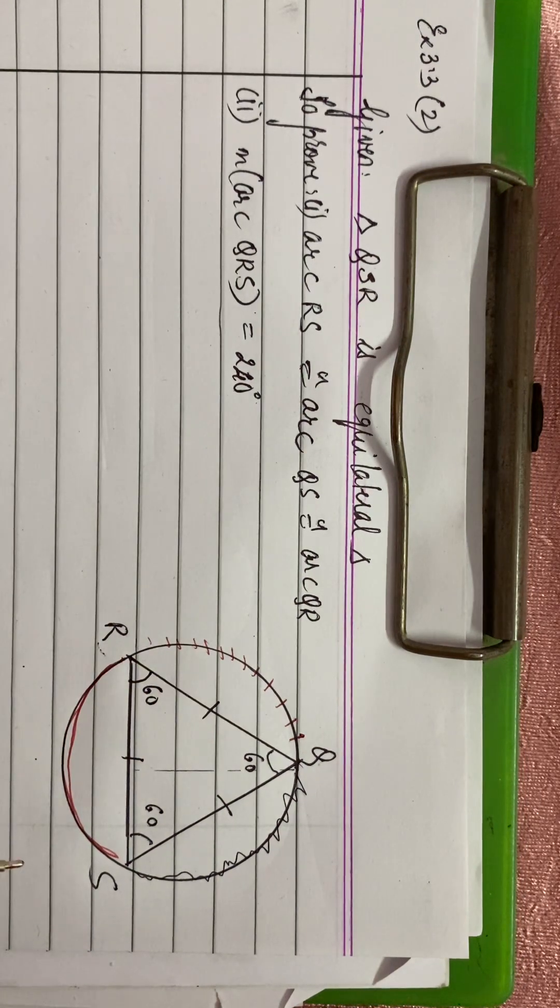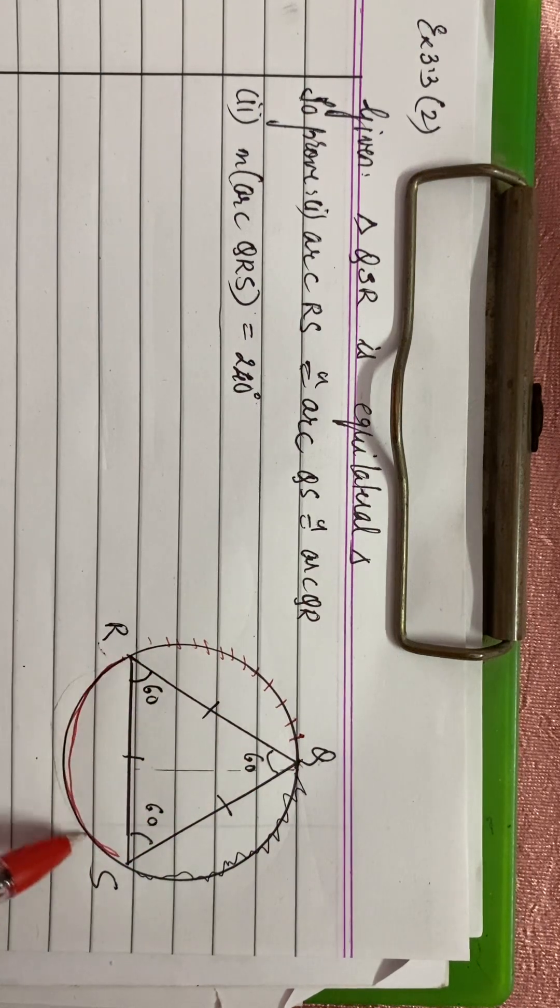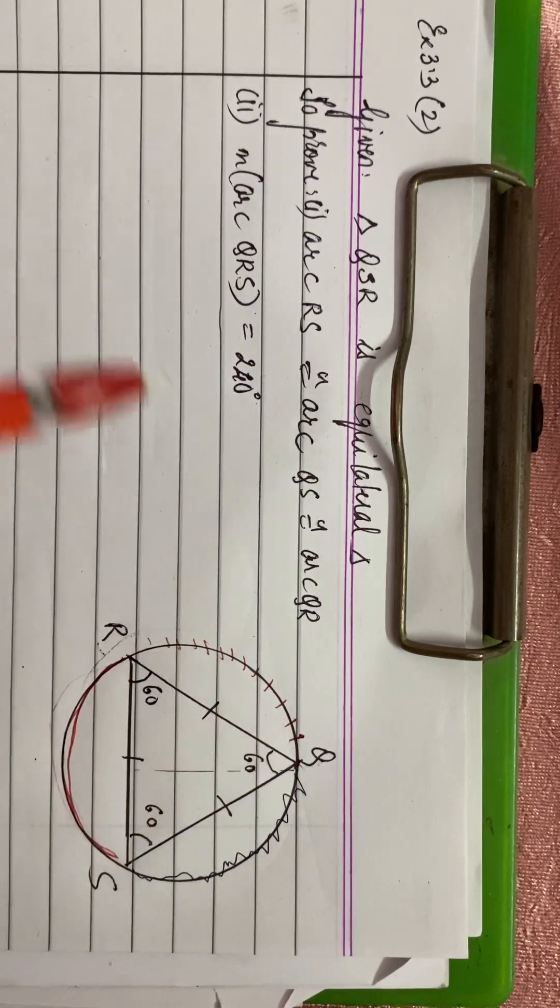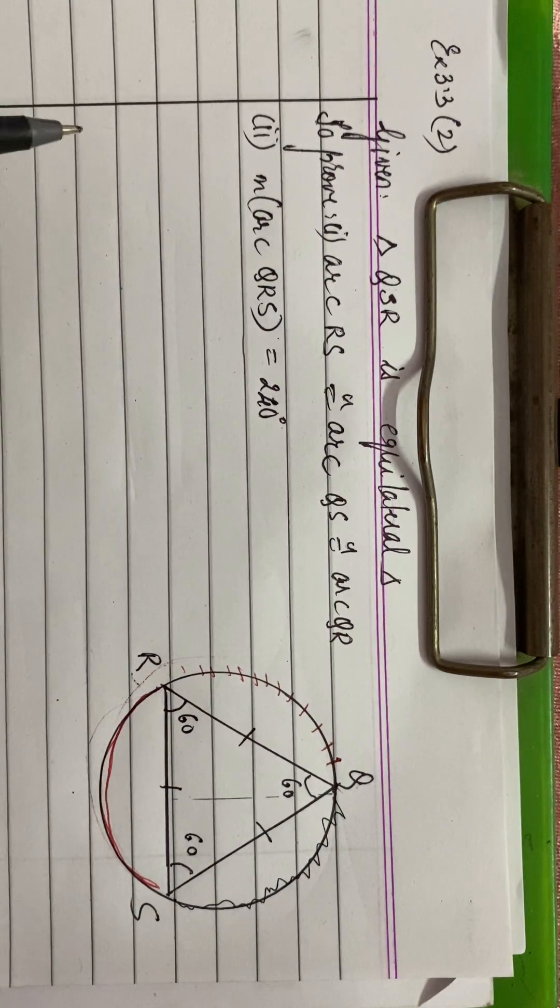Then the other thing that we have to show is that this measure of arc QRS, this much, is 240 degrees. So let us take the solution for this or the proof.